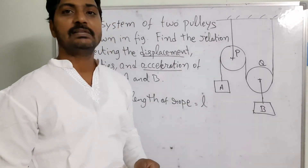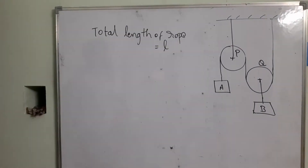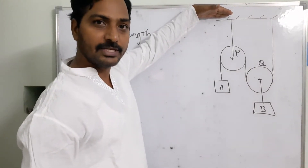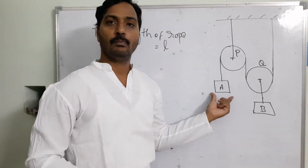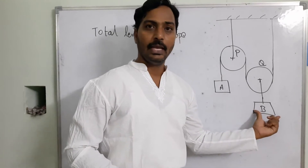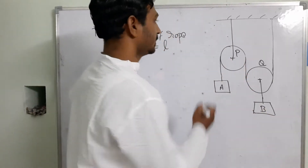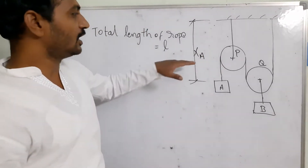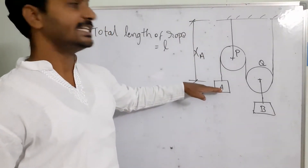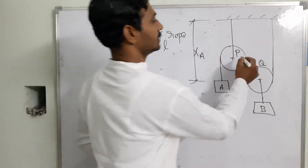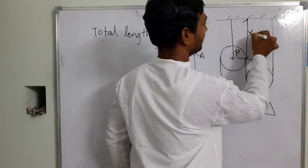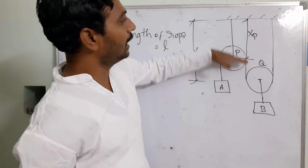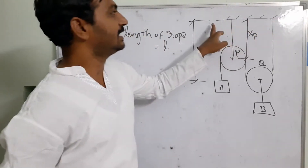I am going to develop the dimensional relationships by taking the fixed support as reference. From this reference, I can find the location of block A, block B, and pulley P. The distance from the support to block A is XA. The distance from the support to the center of pulley P is XP — this is fixed. The distance from the support to pulley Q is XB, and since the length from Q to block B is constant, XB also represents the displacement of block B.